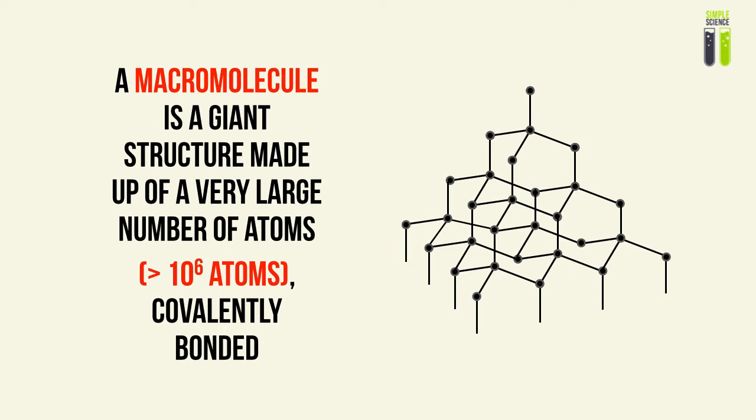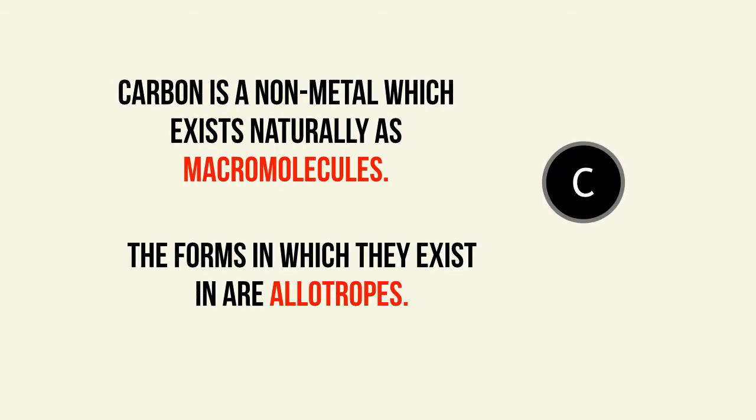Between macromolecules there is covalent bonding, and this certainly makes them distinctive from simple molecules in terms of physical and chemical properties. An element that is common in the natural world where we can see different types of macromolecules is carbon. The forms in which carbon can exist are called allotropes. Carbon has two allotropes — two ways in which it can exist in the natural world — and both are macromolecules.